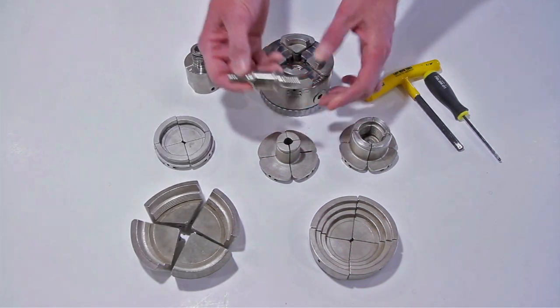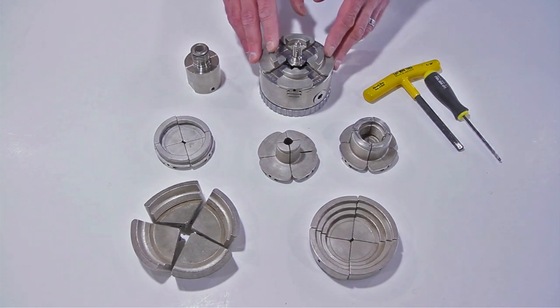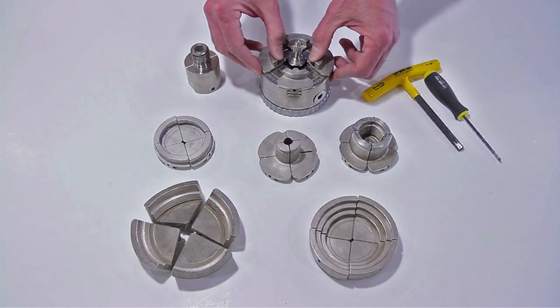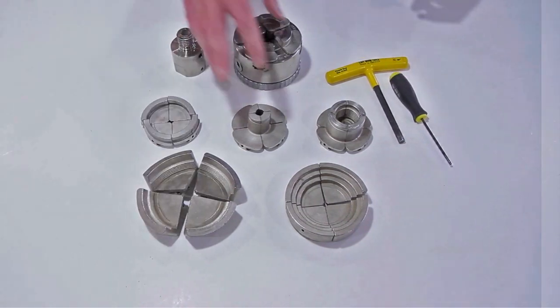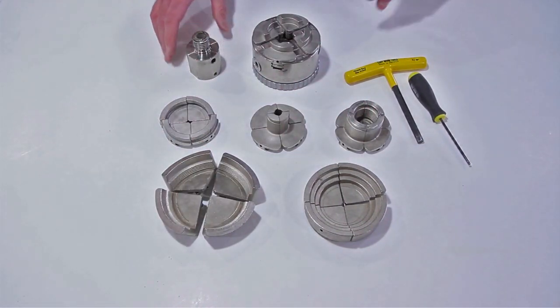The chuck also comes with a screw drive with two different diameters on it. It mounts right in the chuck either way. You can turn the bottom of the bowl, put your tenon on it, and then flip it around and grab it with the jaws to hollow it out. Here are some accessory jaws you can get as well and the spindle adapter.